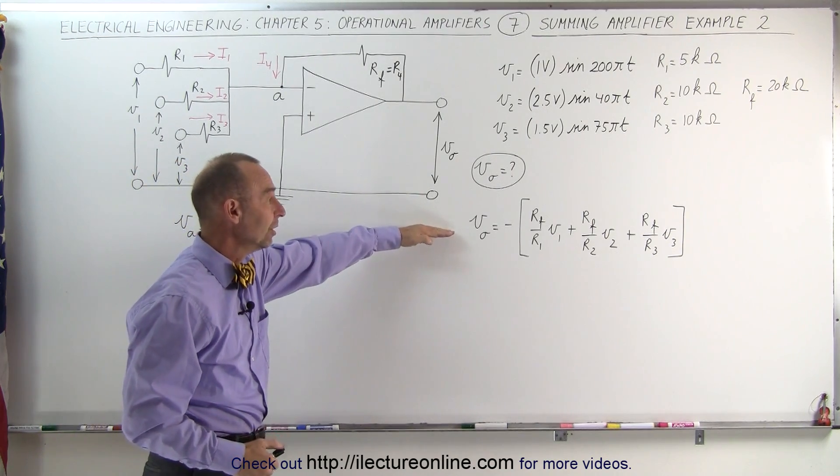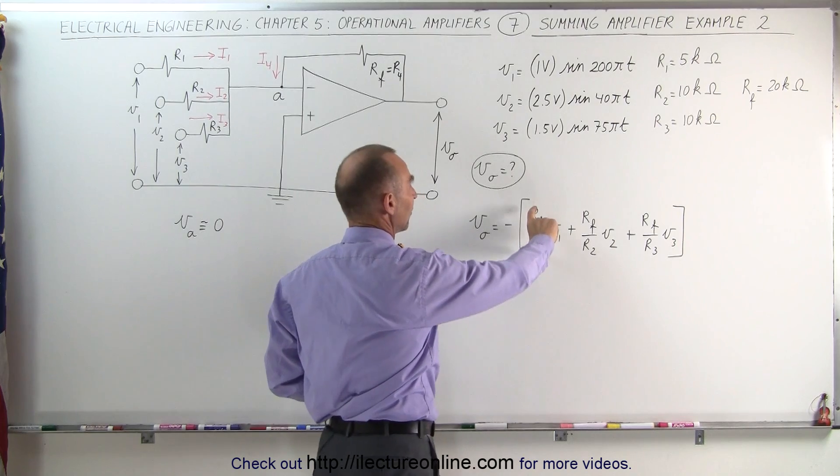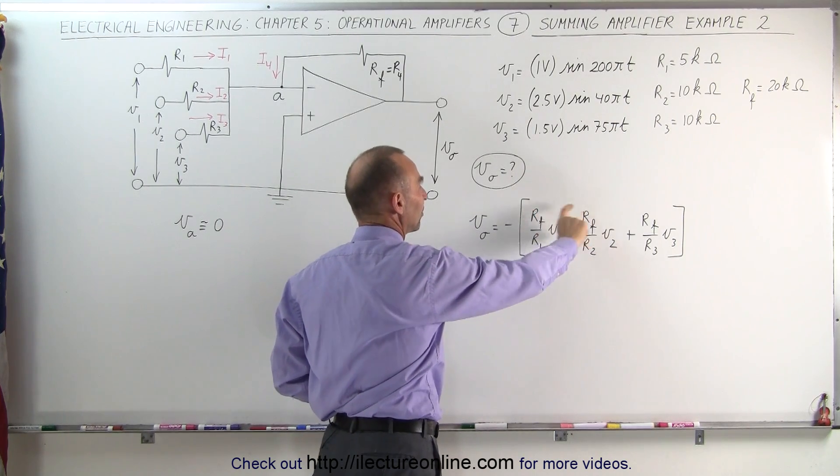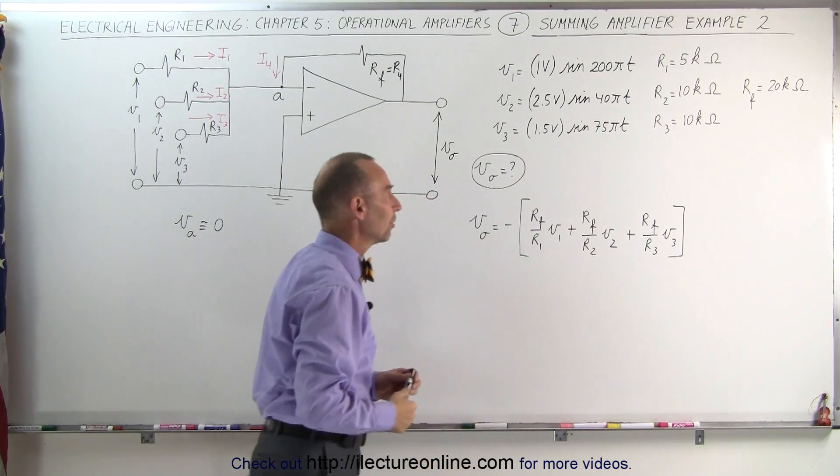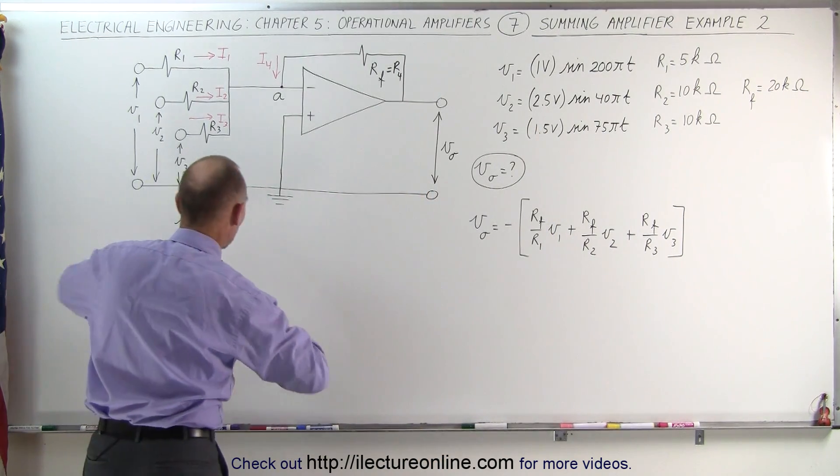We again use the very same equation, and notice that the gain factors are simply again a ratio of the feedback resistors relative to the resistance of each of the inputs. So let's go ahead and work that out.